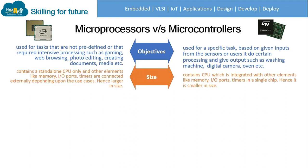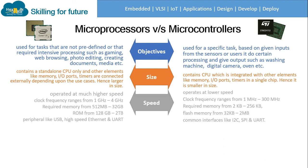Regarding size: a microprocessor contains a standalone CPU, and other elements like memory, input/output ports, and timers are connected externally depending on the use case, making microprocessors larger in size. A microcontroller integrates the CPU with memory, input/output ports, and timers within a single chip, making microcontrollers smaller in size.